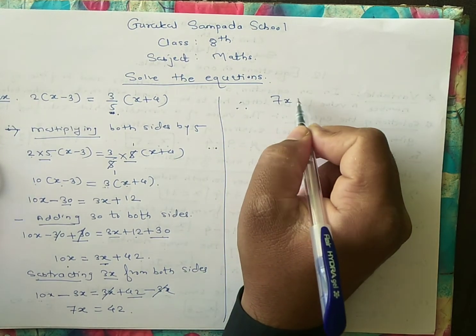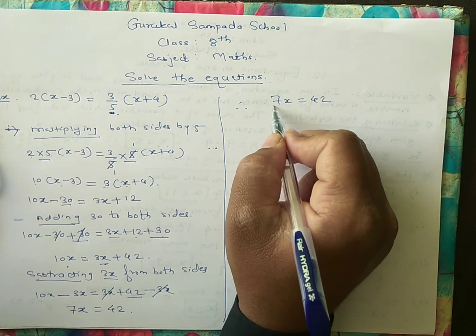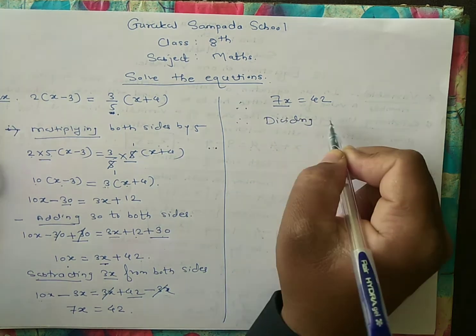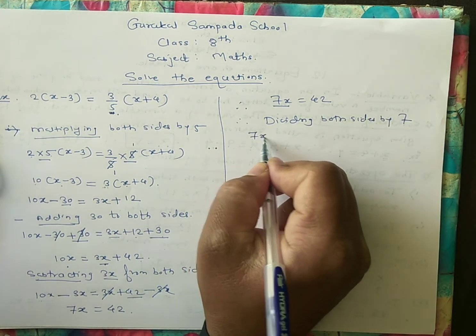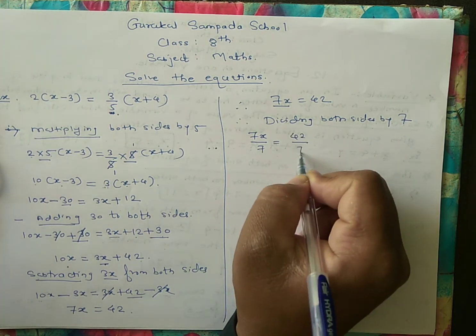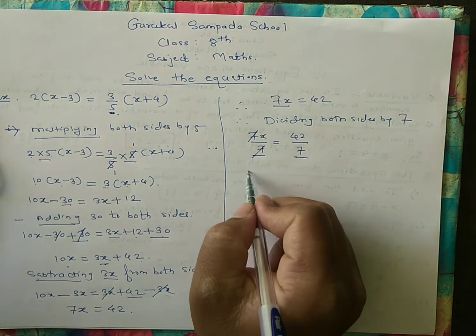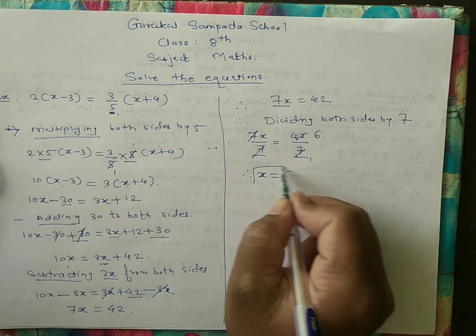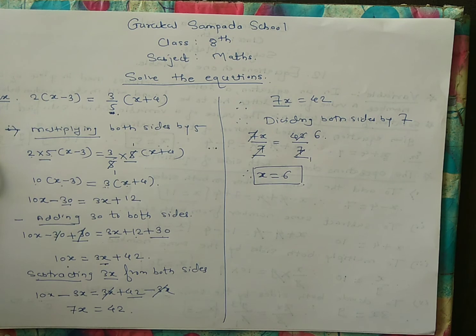Now we need to find the solution for variable x. We have 7x equals 42, so we divide both sides by 7. 7x divided by 7, the 7s cancel, giving x equals 42 divided by 7, which is 6. So x equals 6. This is the solution of the equation.